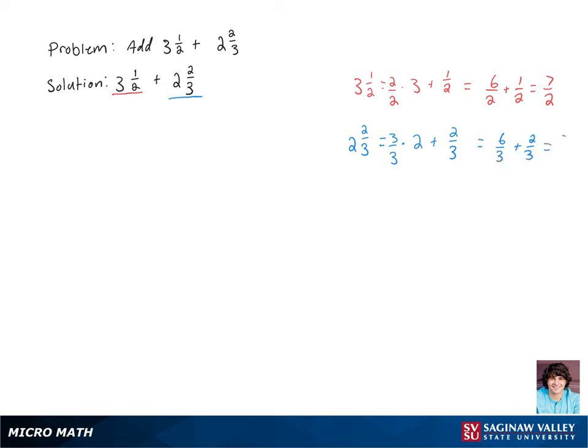Now once we do all of that side work, we're going to rewrite our original problem as 7 halves plus 8 thirds. Let's find a common denominator again by multiplying 8 thirds by 2 over 2 and 7 halves by 3 over 3. We get 21 sixths plus 16 sixths. Then we add these up and we get 37 over 6.